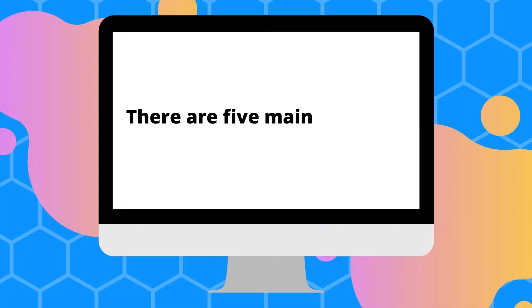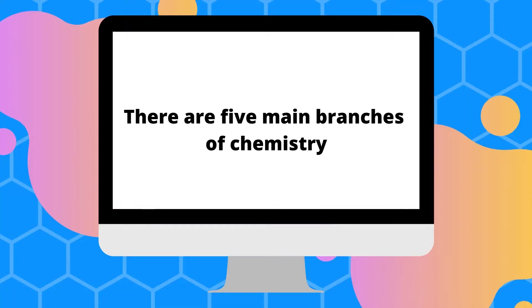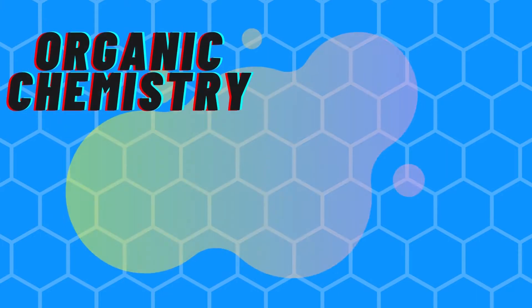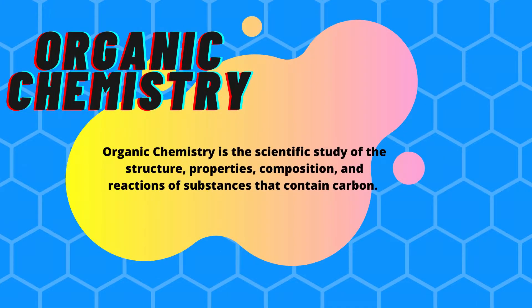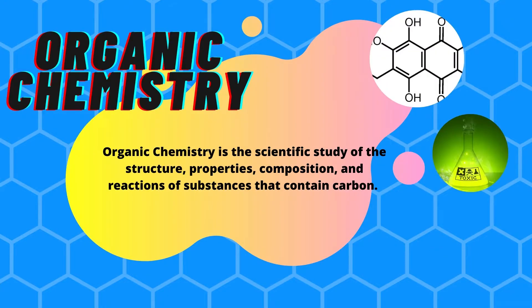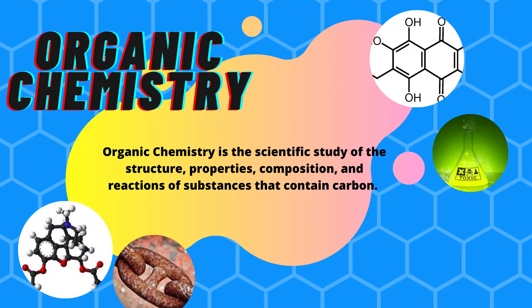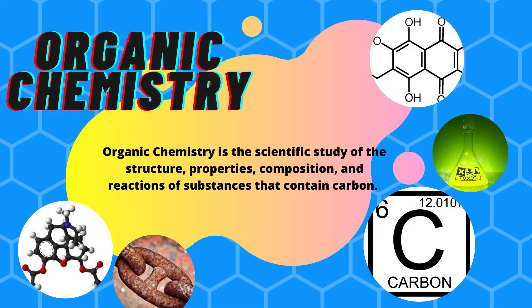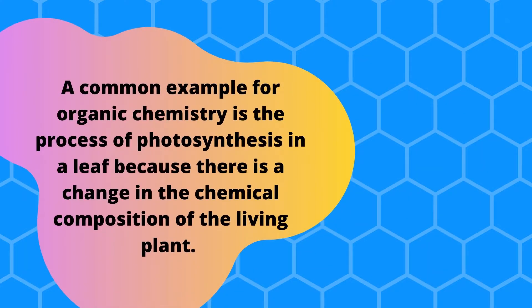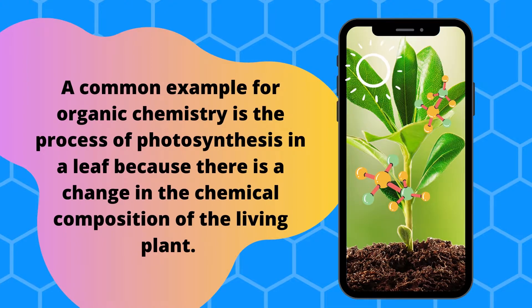There are five main branches of chemistry. Organic chemistry is the scientific study of the structure, properties, composition, and reactions of substances that contain carbon. A common example for organic chemistry is the process of photosynthesis in a leaf, because there is a change in the chemical composition of the living plant.